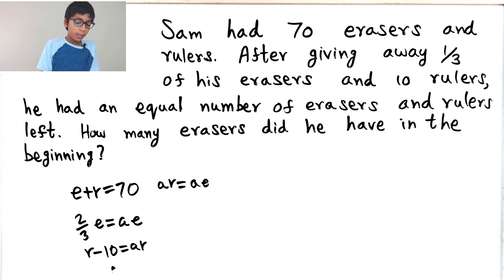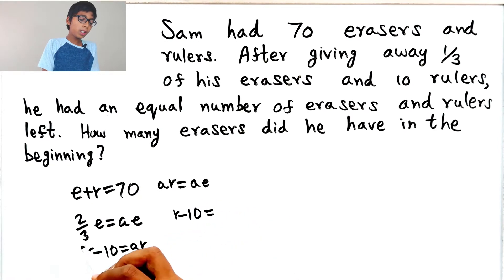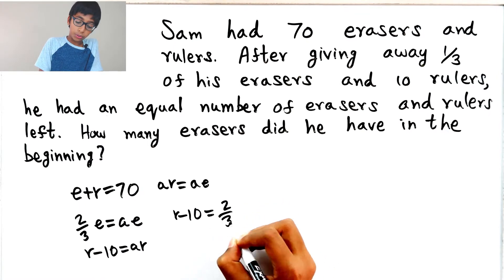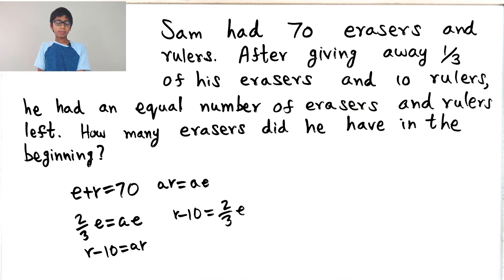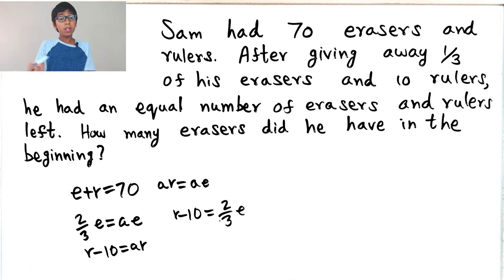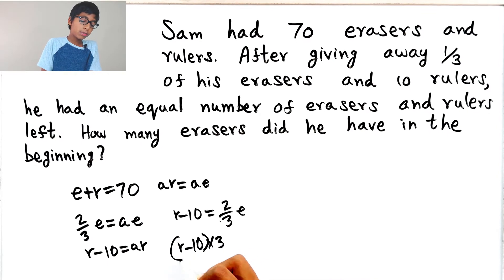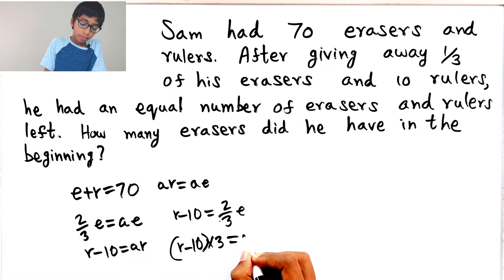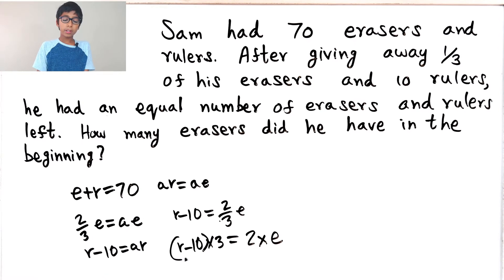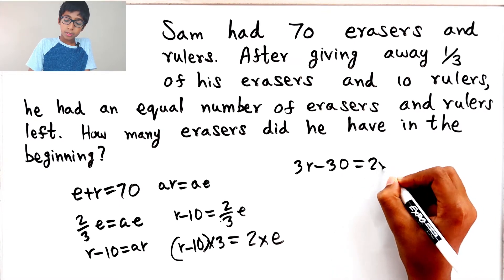So AR equals R minus 10, and R minus 10 equals AE. AE is two-thirds E. Now let's move the divide three over here — then it becomes times three. So it would be (R minus 10) times three, and we put brackets because the times three multiplies the whole thing, equals two times E. So let's solve this equation: three R minus 30 equals two E.